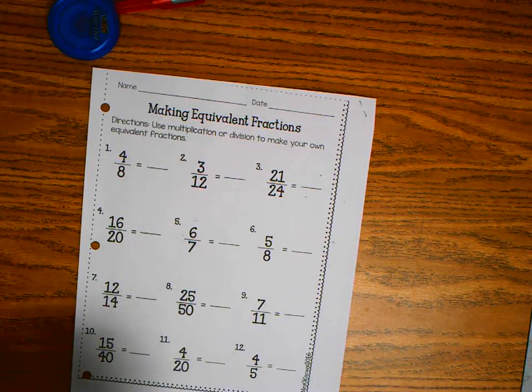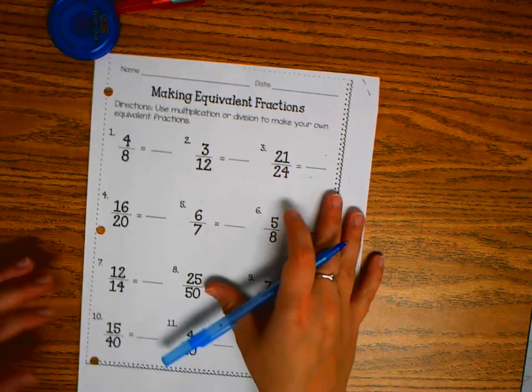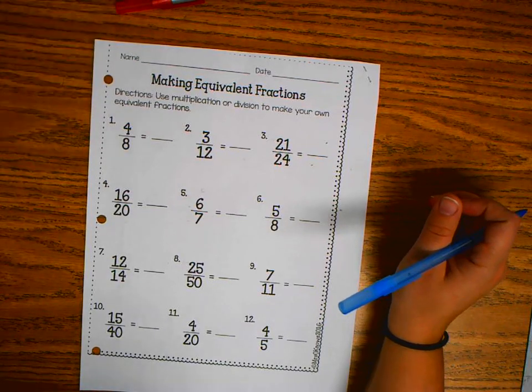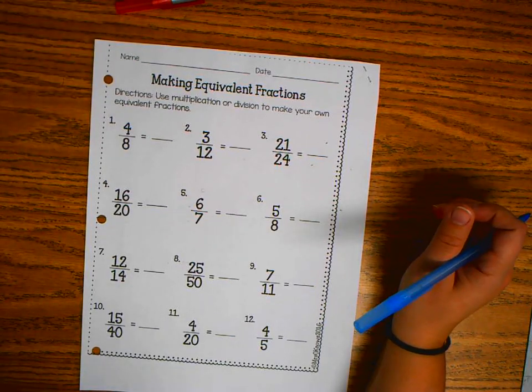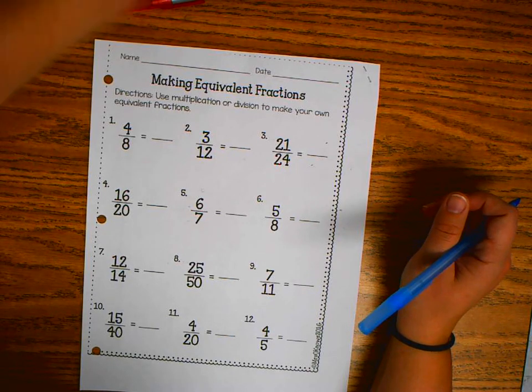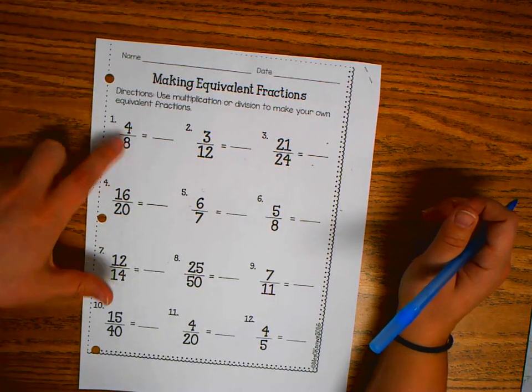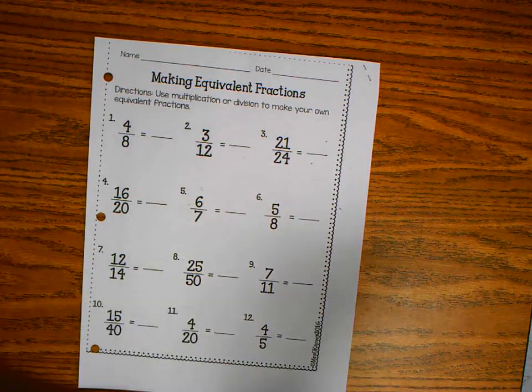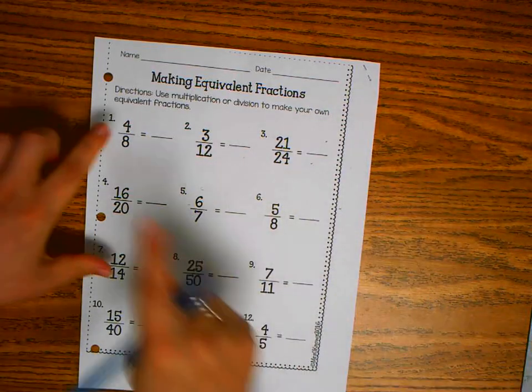And in today's lesson, we are going to be working on finding equivalent fractions. To find equivalent fractions, you are either multiplying or dividing the numerator and the denominator by the same number.